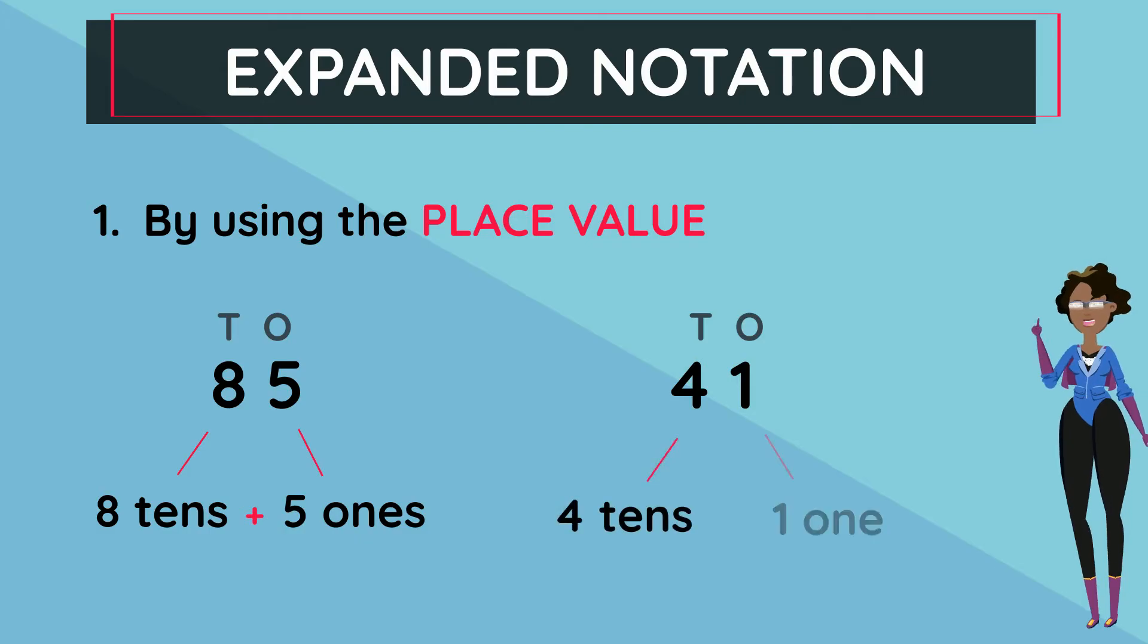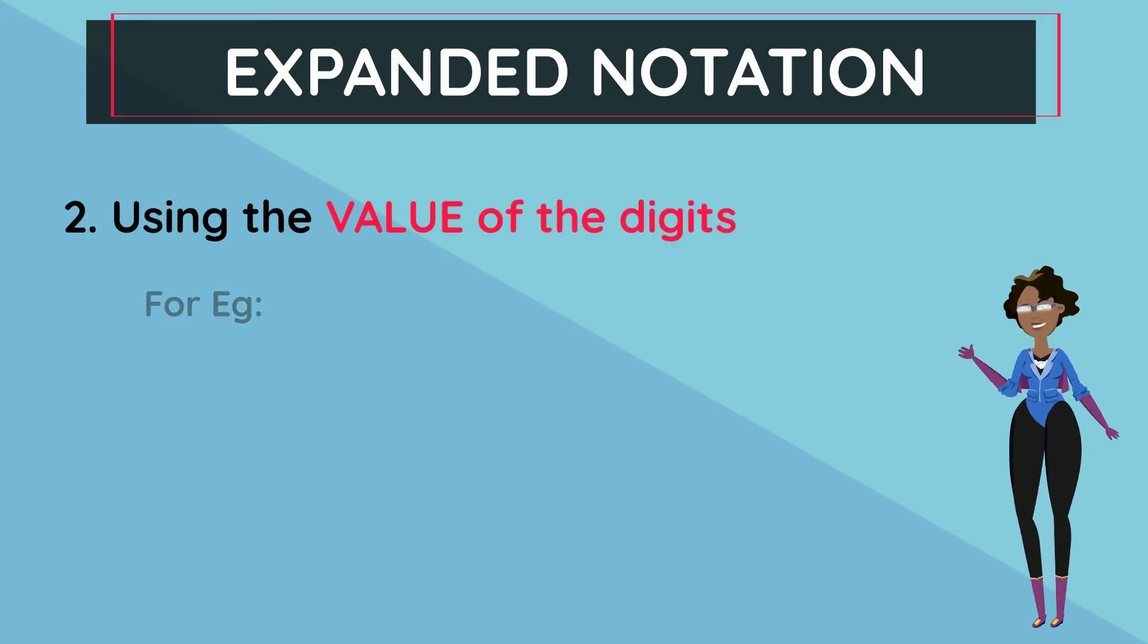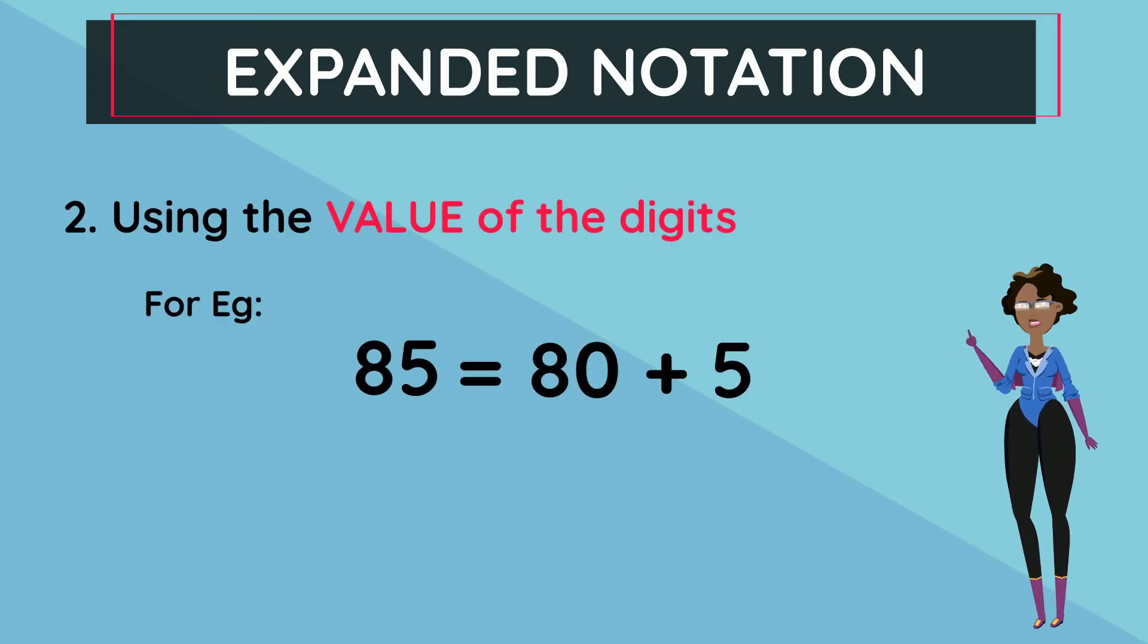The second way is using the value of the digits. 85 is equal to 80 plus 5, and the number 41 is 40 plus 1. The value of each digit is added to get the number.